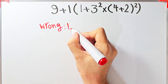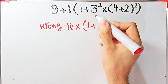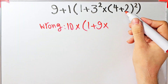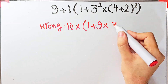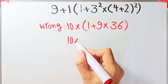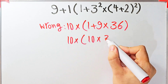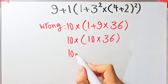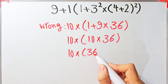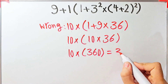For example, some people solve this question like this: 9 plus 1 equals 10, then 10 times 1 plus 3 to the power of 2 equals 9, then times 4 plus 2 which equals 6, and 6 to the power of 2 equals 36. Then 10 times 1 plus 9 equals 10, then times 36 — simplifying the parentheses — 10 times 36 equals 360.